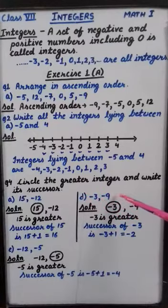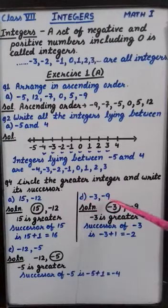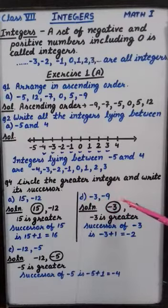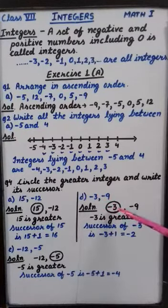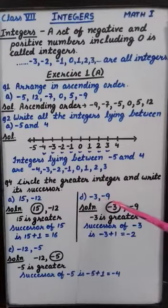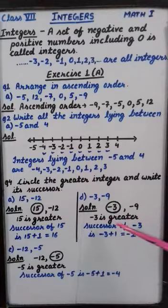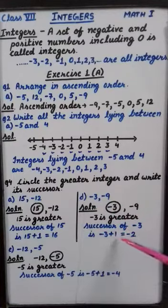Minus 3 and minus 9. Remember this, whenever we are talking about negative numbers, number which is smaller, it becomes greater. So among these two numbers, minus 3 is greater. And what is the successor of minus 3? One more than minus 3.